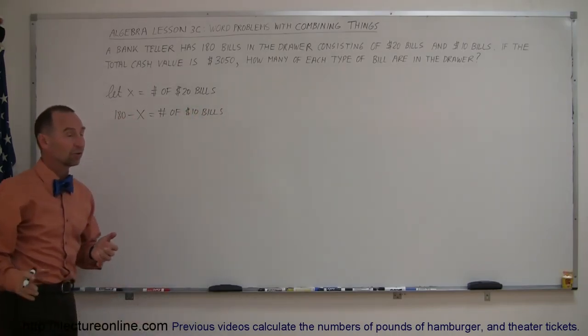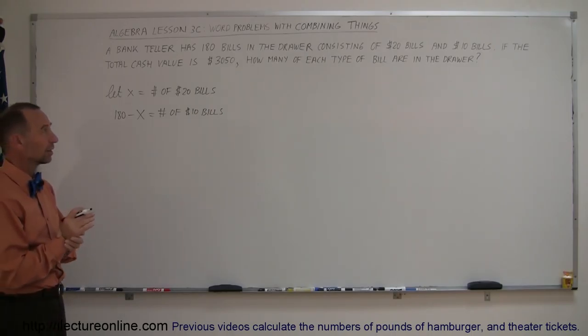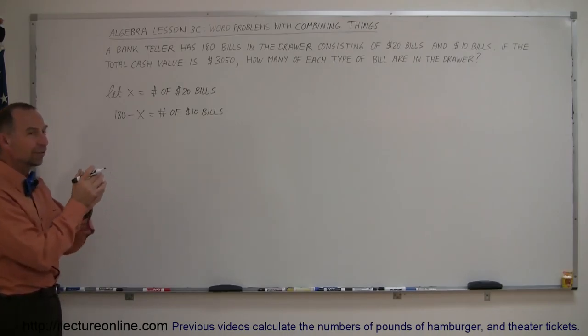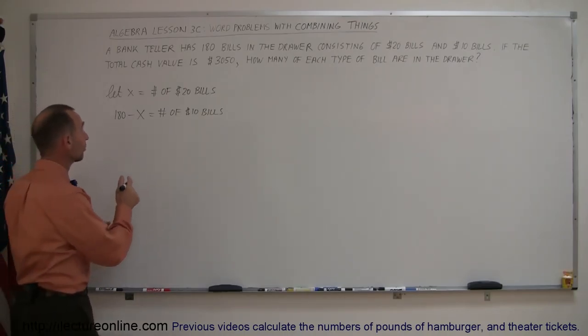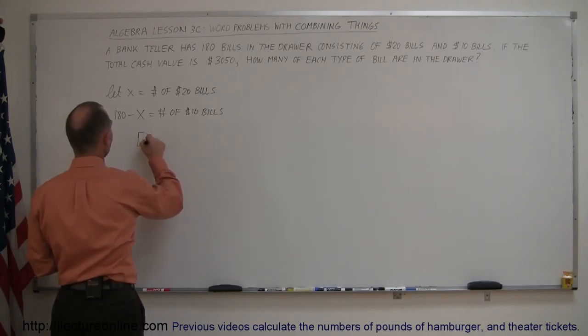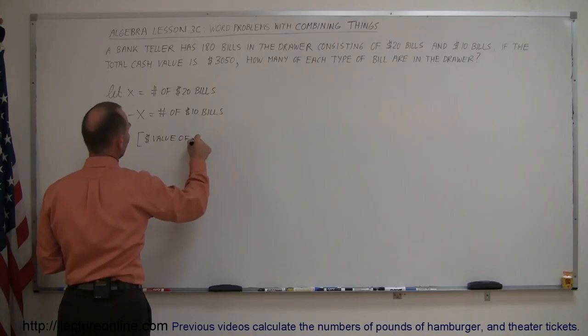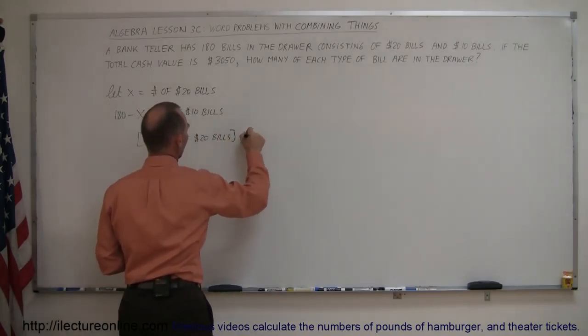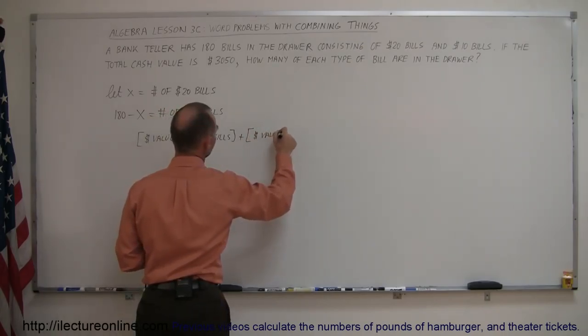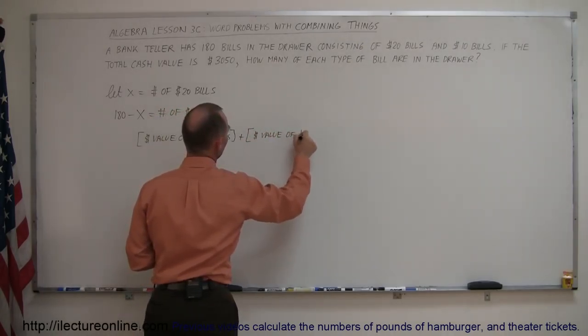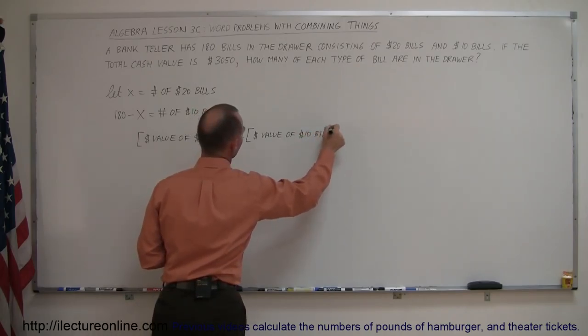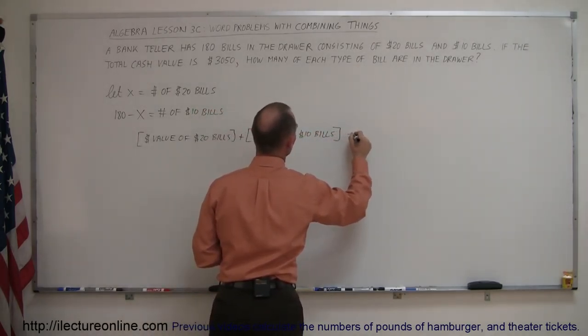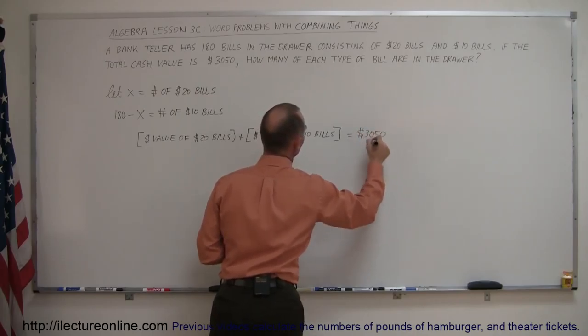Okay, now we're ready to set up an equation. We're told that the total cash value is $3,050. So the value of the $20 bills plus the value of the $10 bills equals $3,050.